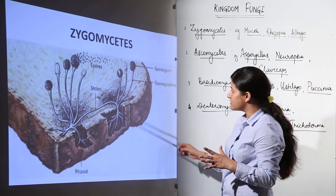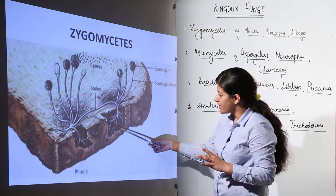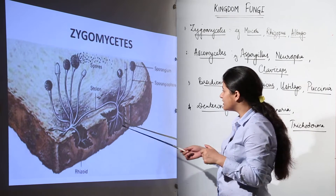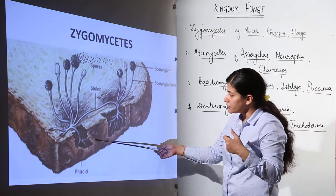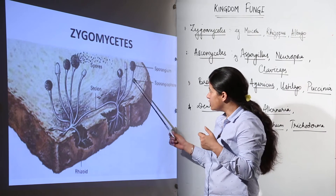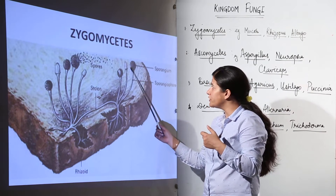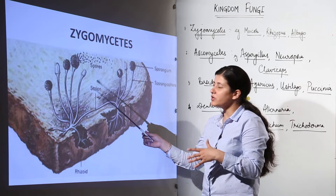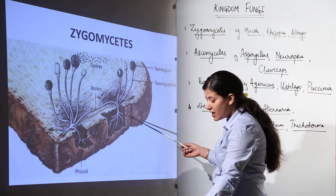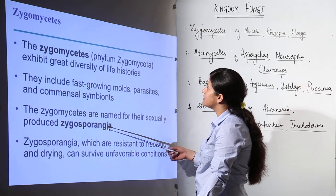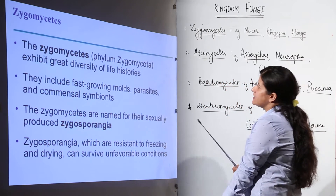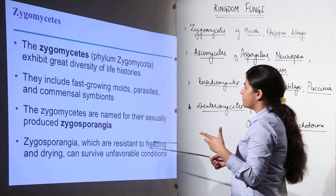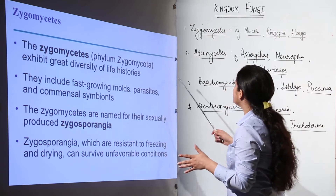The example shown is Rhizopus. You can see the mycelium; the rhizoids are root-like structures which are embedded in the substratum to take up nutrition. They develop and form the mycelium. You can see the sporangiophore — the stalk which bears the sporangium. There is a stolon connecting the sporangiophores, and the sporangium has spores present inside it. The name Zygomycetes comes from the zygosporangia present in sexual reproduction.